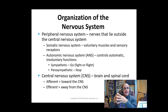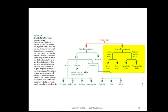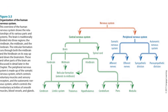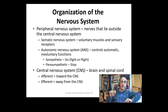Now we turn our attention to the organization of the nervous system. The nervous system has two main divisions: the central and the peripheral. The central nervous system consists of the brain and the spinal cord, while the peripheral nervous system consists of nerves that lie outside the brain and spinal cord. In the peripheral nervous system, afferent nerve fibers send information towards the central nervous system, while efferent nerve fibers send information away from it. There are two divisions: the somatic or voluntary portion, and the autonomic or involuntary portion.